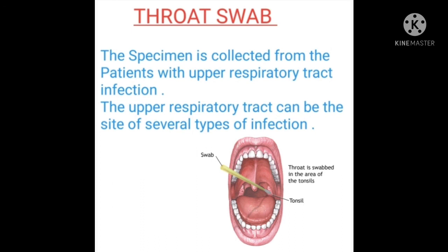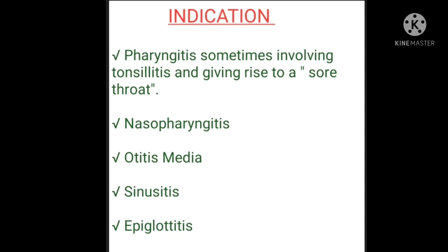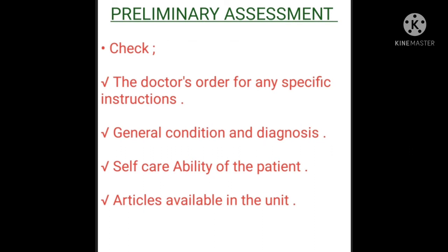Throat swab: the specimen is collected from patients with upper respiratory tract infection. The upper respiratory tract can be the site of several types of infection. Purposes: to detect the causative microorganism, to diagnose the disease condition, and to detect the correct antibiotics for effective treatment. Indications include pharyngitis — sometimes involving tonsillitis and giving rise to a sore throat — nasopharyngitis, otitis media, sinusitis, and epiglottitis.